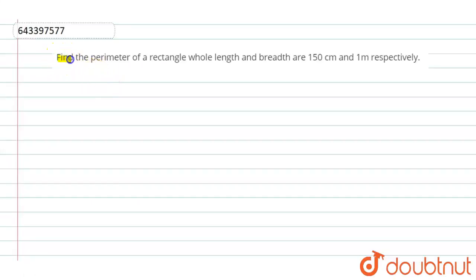Find the perimeter of a rectangle whose length and breadth are 150 centimeter and one meter respectively. So here we have given the length of a rectangle and breadth of a rectangle are: length is 150 centimeter and breadth is one meter.